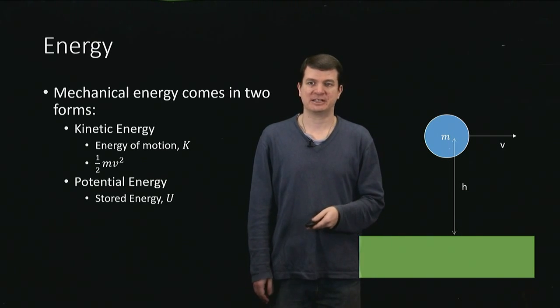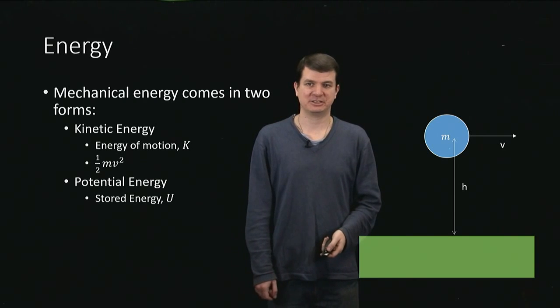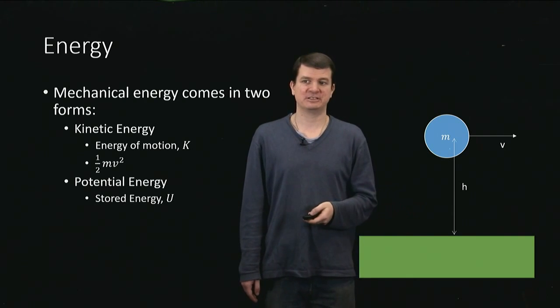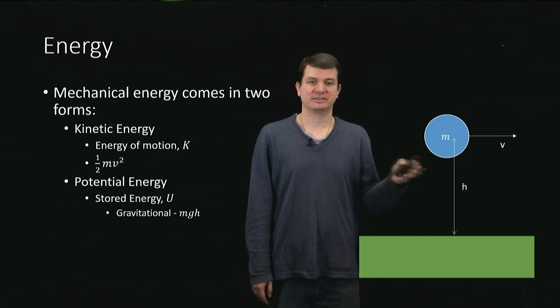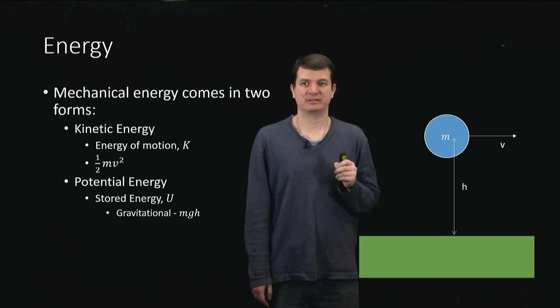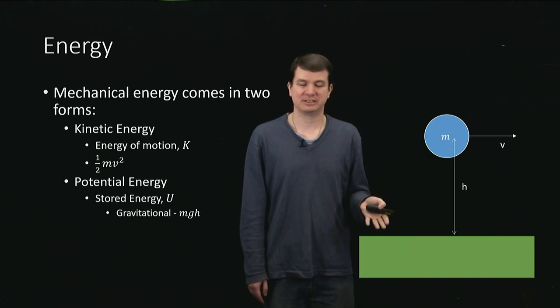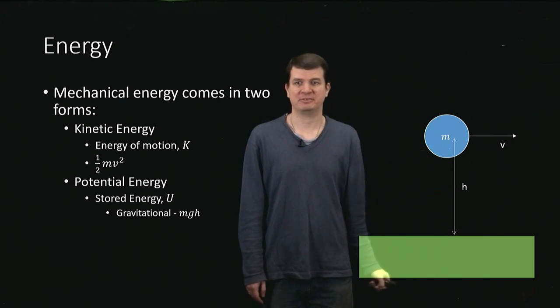And as we said, this is coming from the fact that gravity wants to pull it down. So not surprisingly, we'll call this energy gravitational potential energy. And it too has a very simple form. It is just m, the mass of the object, times g, the gravitational acceleration, times the height above the ground.